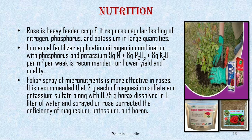Potassium is responsible for hardness of the flower stem, better quality of bloom, and increased resistance to diseases. Due to potassium deficiency, lower leaves show browning, stems become weak, and color of the flower gets poorer. In manual fertilizer application, nitrogen in combination with phosphorus and potassium — 9 g nitrogen + 8 g phosphorus + 8 g potassium per square meter per week — is recommended for flower yield and quality. Foliar spray of micronutrients is more effective in roses: 3 g each of magnesium sulfate and potassium sulfate along with 0.75 g borax dissolved in 1 liter of water corrects deficiency of magnesium, potassium, and boron.